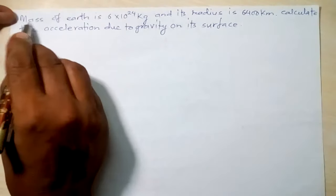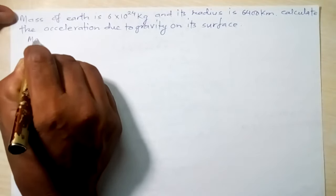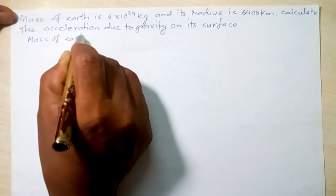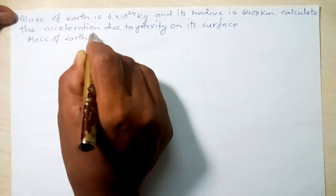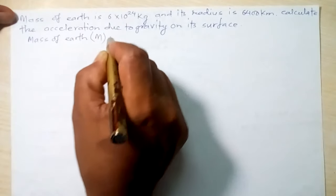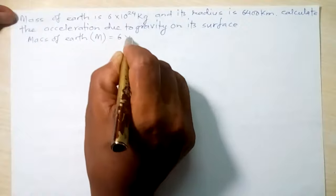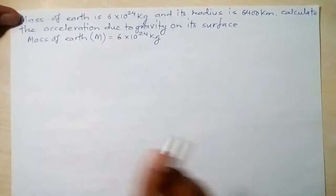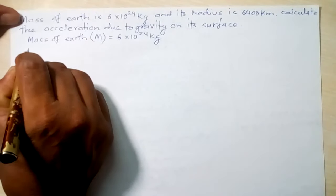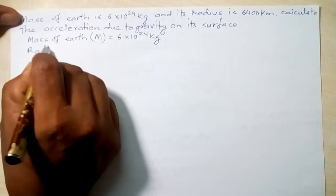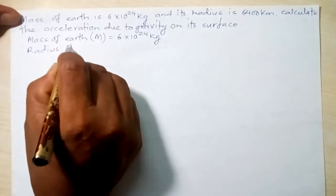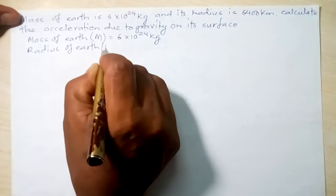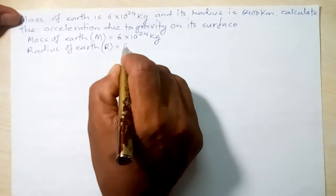Now I'm going to convert this into mathematical form. Mass of Earth, denoted by capital M, is equal to 6×10²⁴ kilograms. Radius of Earth is also given, denoted by capital R.